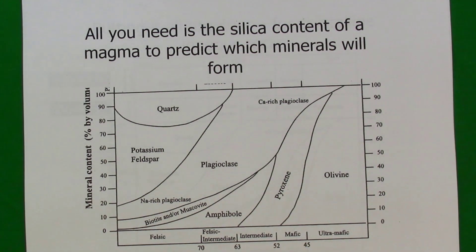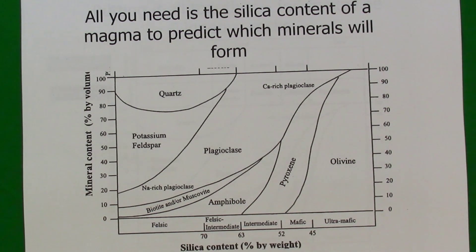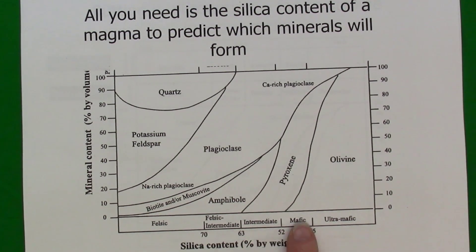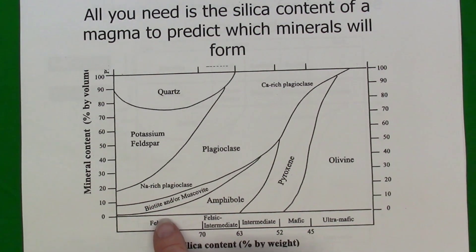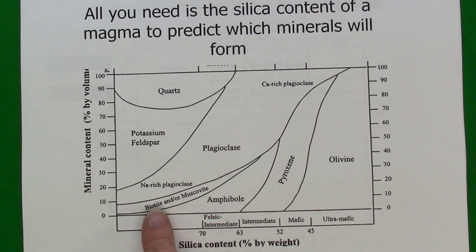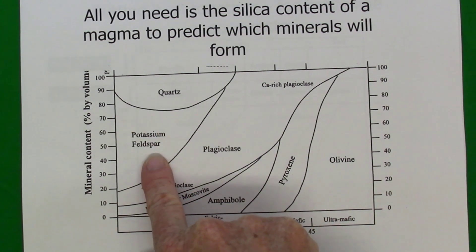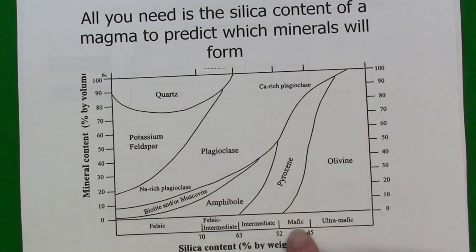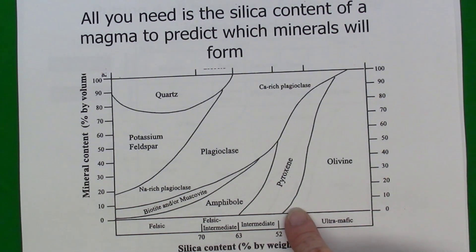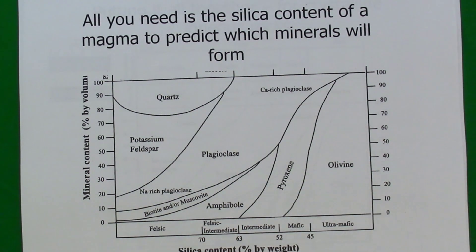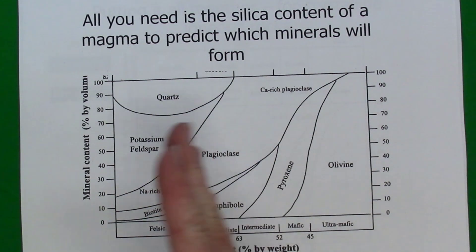If we know the silica content of the magma or lava, we can predict which minerals will form. The diagram shows felsic at 70% silica or greater, intermediate, mafic, and ultramafic at less than 45% silica content by weight. For felsic magma, we might get a little amphibole, some biotite and muscovite, a significant amount of sodium-rich plagioclase, even more potassium-rich feldspar, and quartz. For a mafic rock with 45–52% silica content, we're likely to get some olivine, a significant amount of pyroxene, and some calcium-rich plagioclase. Notably, no rocks exist that have both quartz and olivine, because they form from magmas of different compositions.